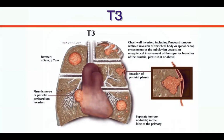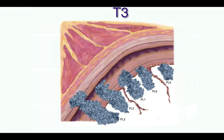Why do we operate some T4 tumors but not others? The answer lies in survival. Patients with tumors invading the superior sulcus, carina, superior vena cava, or mediastinum can have higher than 30% survival when operated. We know that if we refer these patients to oncological treatment they have approximately 15% survival. If we can provide higher survival and the tumors are technically operable, we operate. Of course the nodal status should be N0.